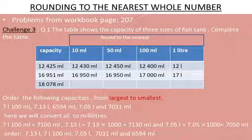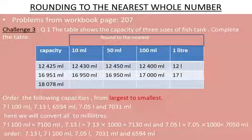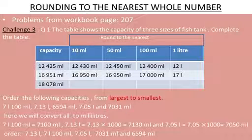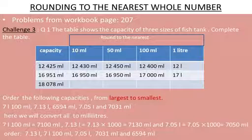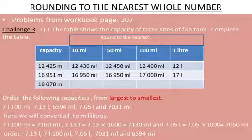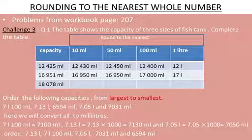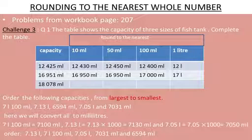The first tank's capacity is 12,425 milliliter. Rounding to 10 ml: look at the units place — it is 5, so round up, giving 12,430 ml. Rounding to 50 ml: the last two digits are 25, which is the halfway point of 50, so round up to 50, giving 12,450 ml.